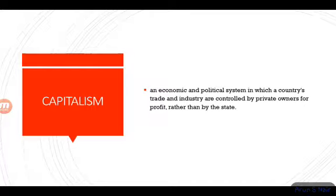There are three types: capitalist economy, socialist economy, and mixed economy. Capitalism is an economic system based on private ownership — an economic and political system in which a country's trade and industry are controlled by private owners for profit.